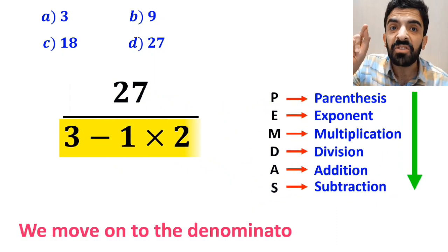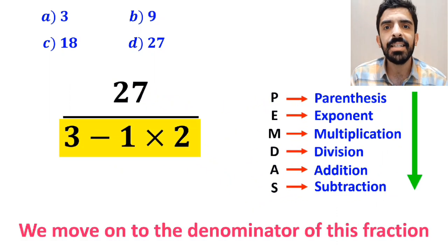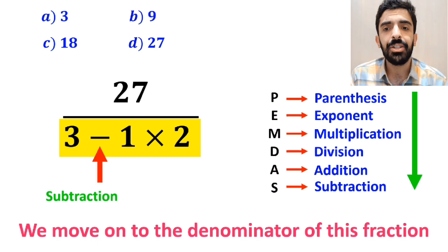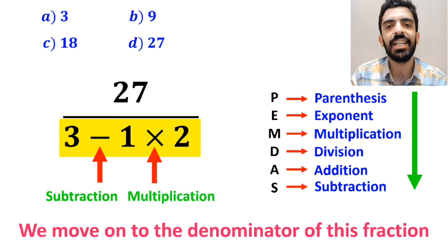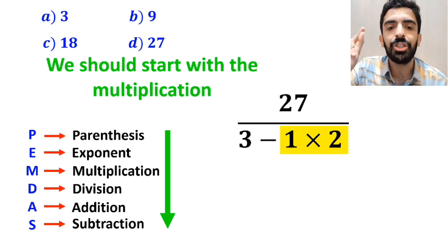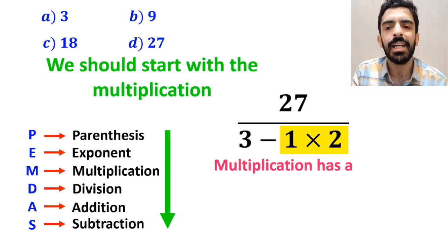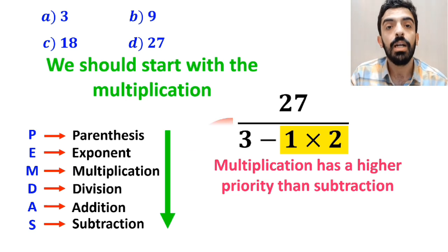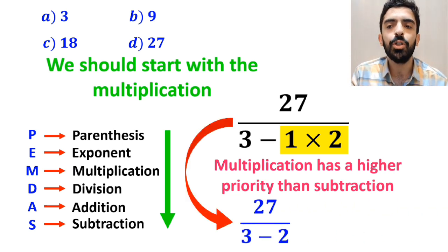Then, we move on to the denominator of this fraction. As you can see in the image, in the denominator, first we have a subtraction sign, and then a multiplication sign. We should start with the multiplication between 1 and 2 because multiplication has a higher priority than subtraction. So, this expression simplifies to 27 over 3 minus 2, which further simplifies to 27 over 1.